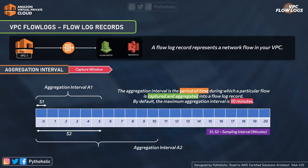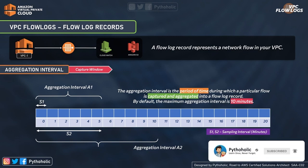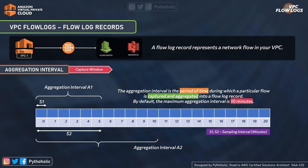Similarly, S2 has a sampling interval of five minutes and an aggregation interval of 10 minutes, giving a log capture window of exactly 10 minutes. Flow logs work on the principle of the capture window timeframe, and they can produce more flow log records if the maximum aggregation interval is reduced. If you reduce the maximum aggregation interval from 10 minutes to one minute, it is going to generate a huge amount of log records.